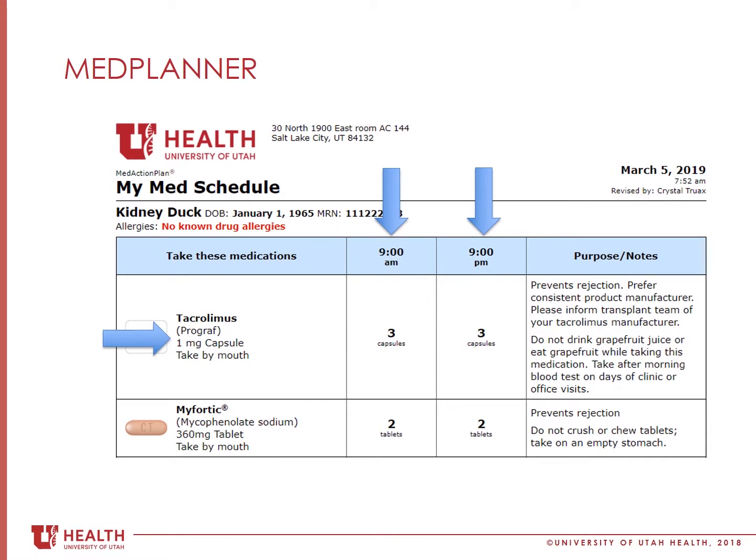Just below that is how many milligrams, or the strength of the pill. Medications are typically given at 9 a.m. and 9 p.m. while you are at the hospital, and you should try to continue this schedule after discharge if it works for your routine at home. In the middle columns, the med planner lists how many of the pills you should take each time for each medication. If the box is blank, it means you do not take a dose at that time.